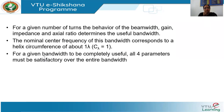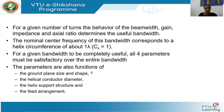For the bandwidth to be completely useful, we need four parameters to be satisfied over the entire bandwidth: beam width, gain, impedance, and axial ratio. These parameters are also functions of the ground plane size and shape, the helical conductor diameter (small d), the helix support structure, and the feed arrangement — whether axial feed or peripheral feed.